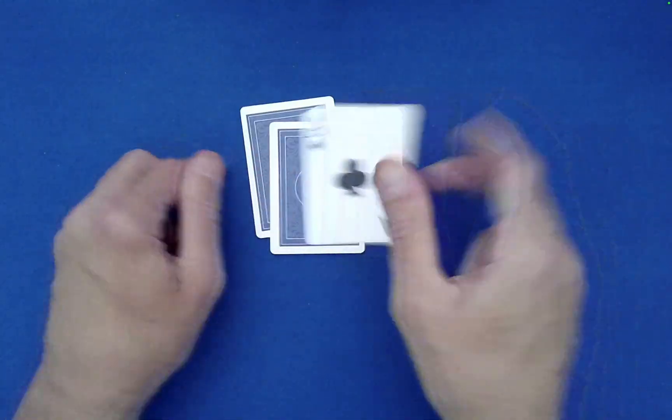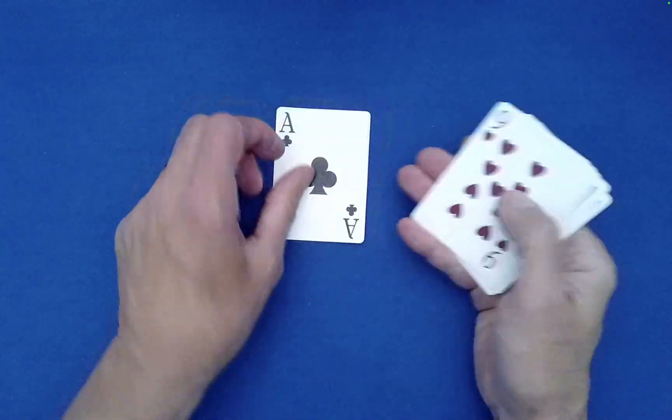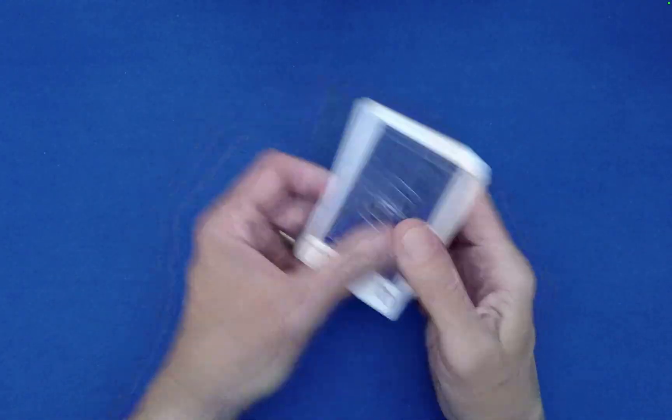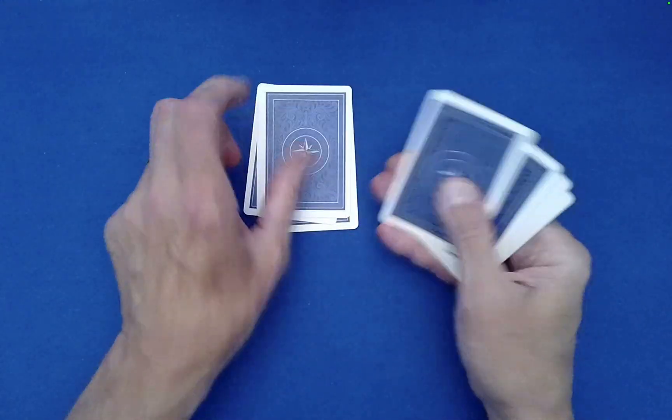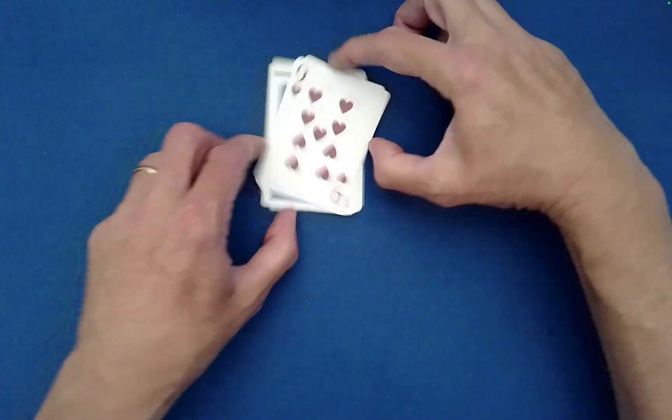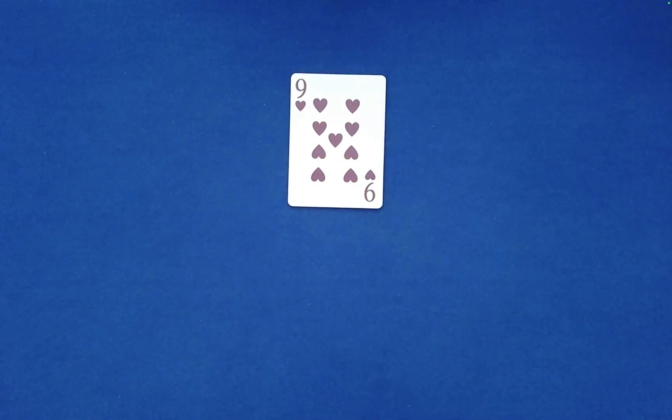And then the fact is when you spell out A-C-E, drop the rest on top, O-F, drop the rest on top, C-L-U-B-S, drop the rest on top, it is guaranteed to reveal the spectator's freely chosen card. So that's the routine and a good part of the secret behind it.